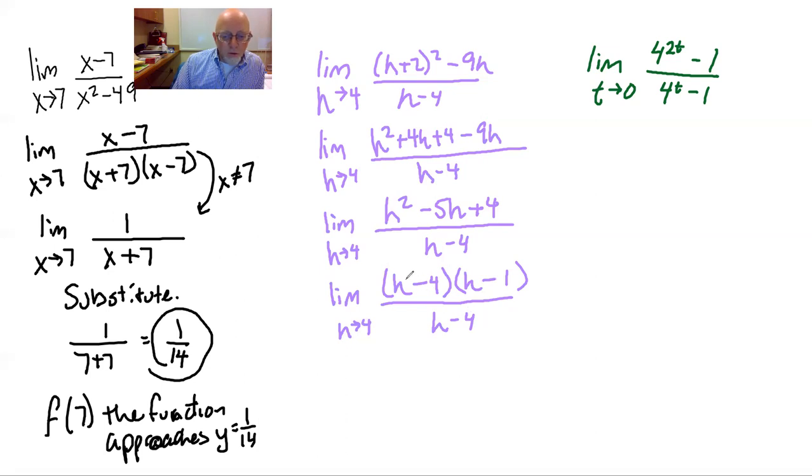So now when we cancel, this winds up being h minus one over one, provided h does not equal four. Because that's the stipulation we have. But h doesn't equal four because it's the limit. The h could equal 3.999999, 4.0001, as long as it doesn't equal four, we can do this. Then we substitute.